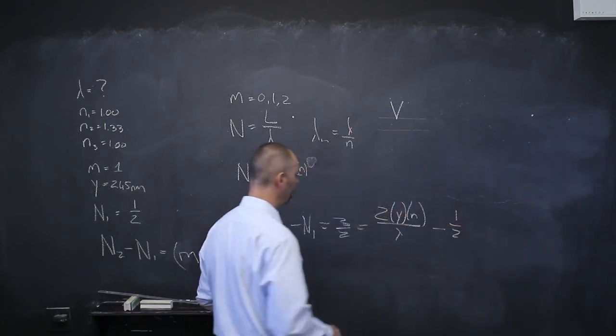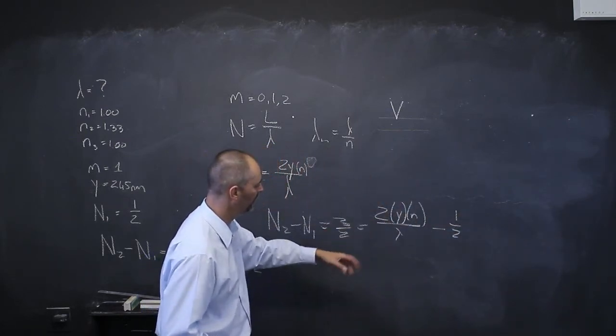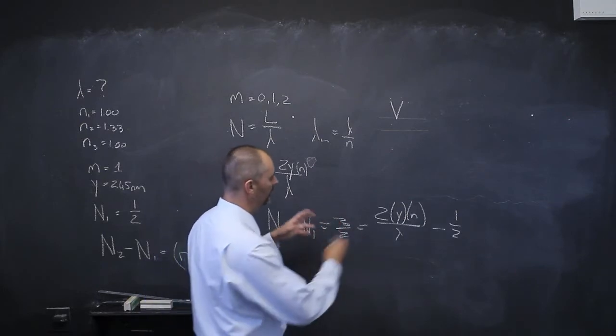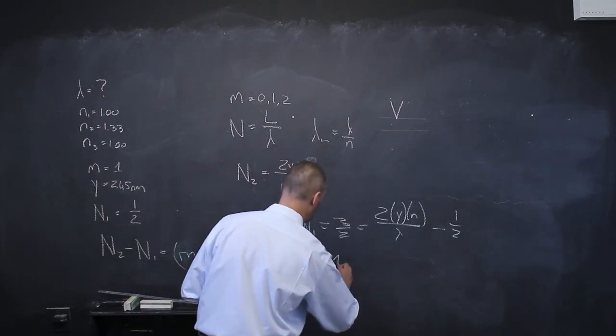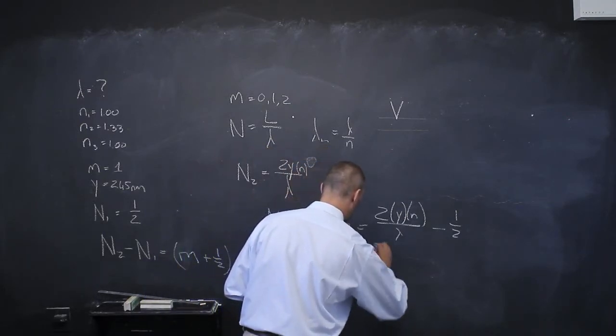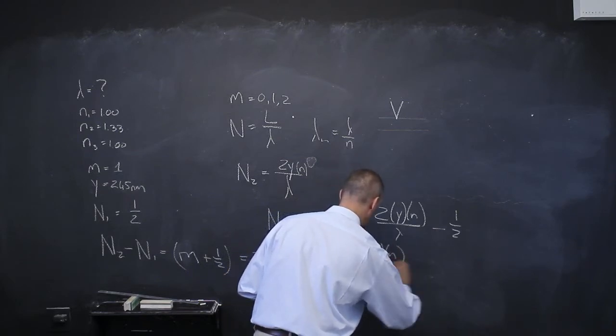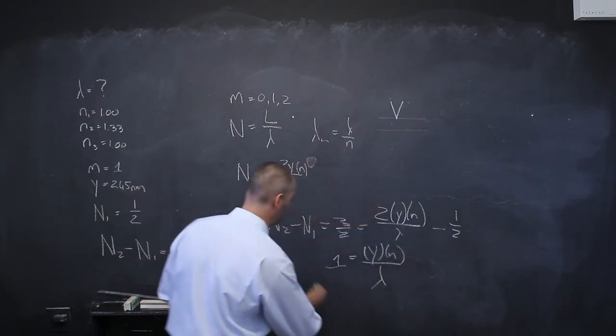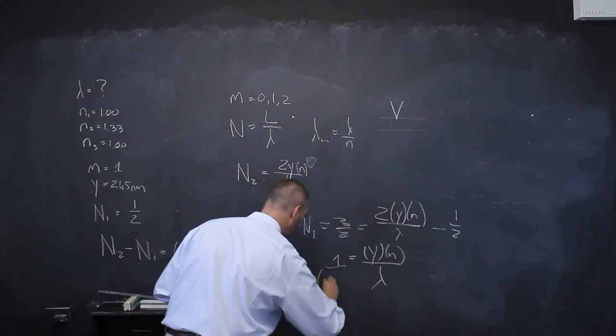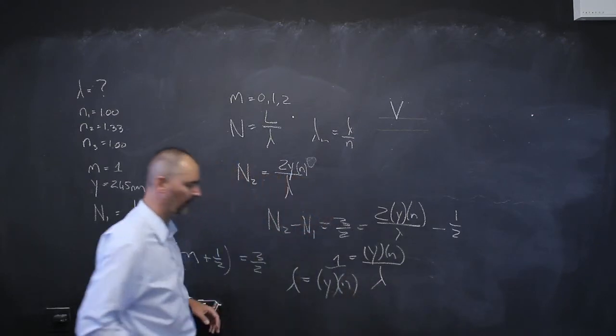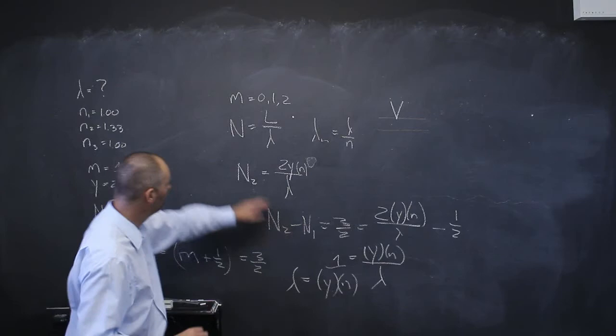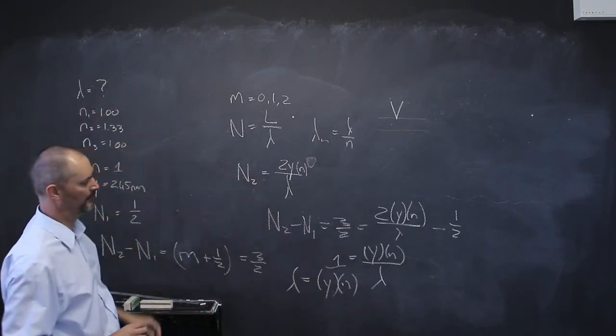So n2 minus n1 is going to equal 3 over 2. And that equals 2yn over lambda minus a half. If I take this half over to the other side, I have 3 over 2 plus 1 over 2, that's 4 over 2, that's 2. The 2s will cancel out. So I'm left with 1 equals yn over lambda. And getting lambda on its own, lambda equals y times n. Problem solved. That gives you lambda directly in air, which is what we wanted.